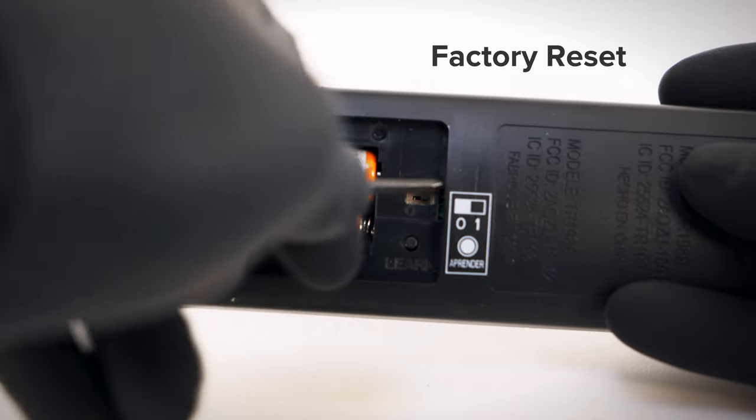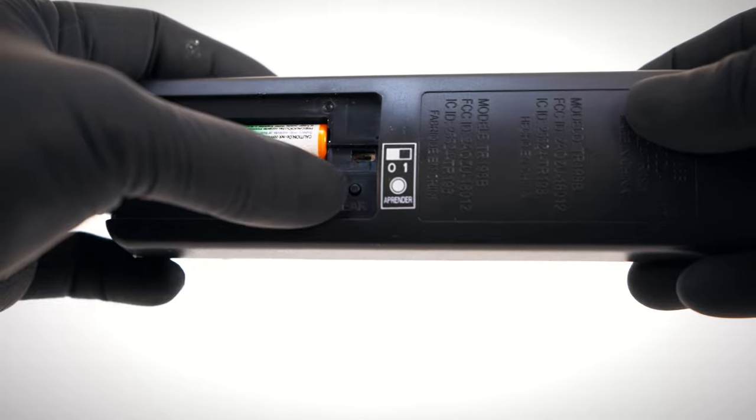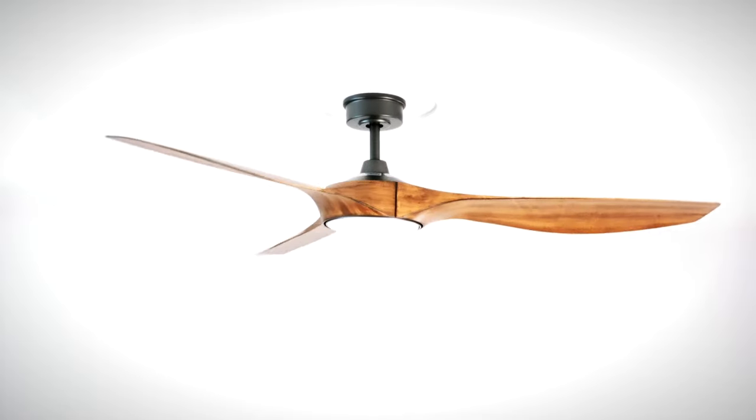To factory reset the fan's programming, ensure the dip switch in the remote is set to zero. Disconnect power to the fan for a few moments, then restore power and press the learn button. The fan light will flash on and off to indicate the reset was successful.